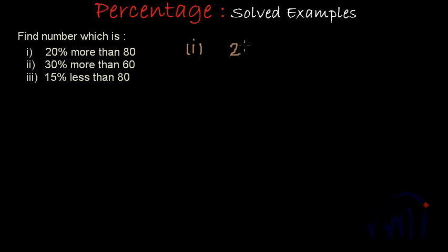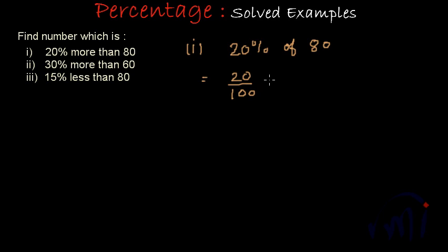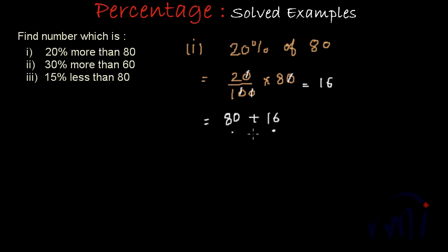20% of 80 will be 20 by 100 — because percent is nothing but the numerator of a fraction whose denominator is 100 — so 20% is represented as 20/100, and this fraction of 80 will be 20/100 multiplied by 80. The zeros cancel and we get 16. So the number which is 20% more than 80 will be 80 plus 16.